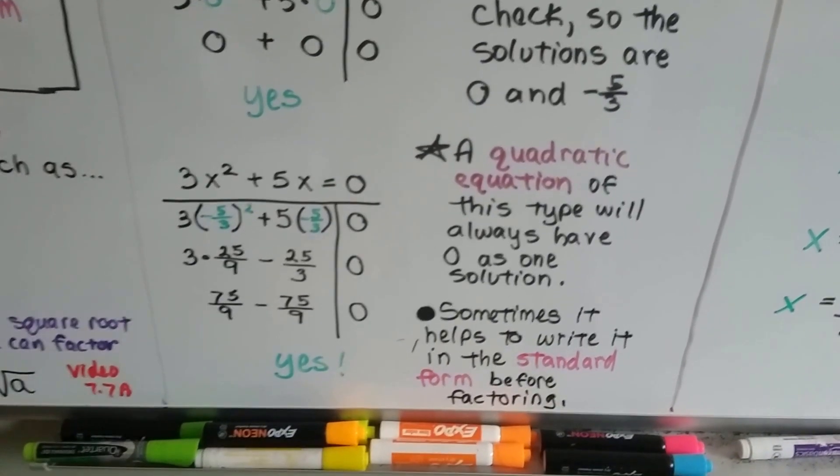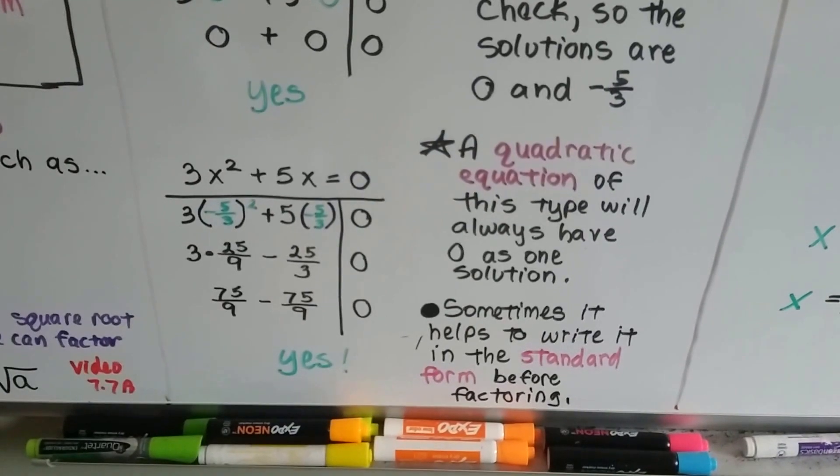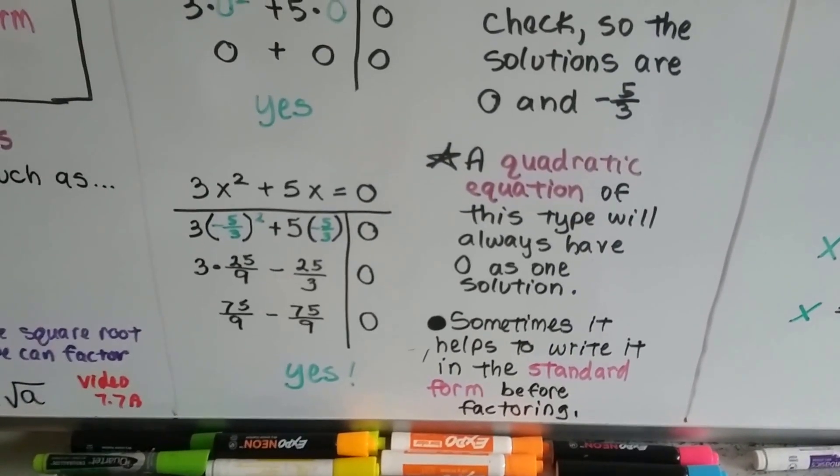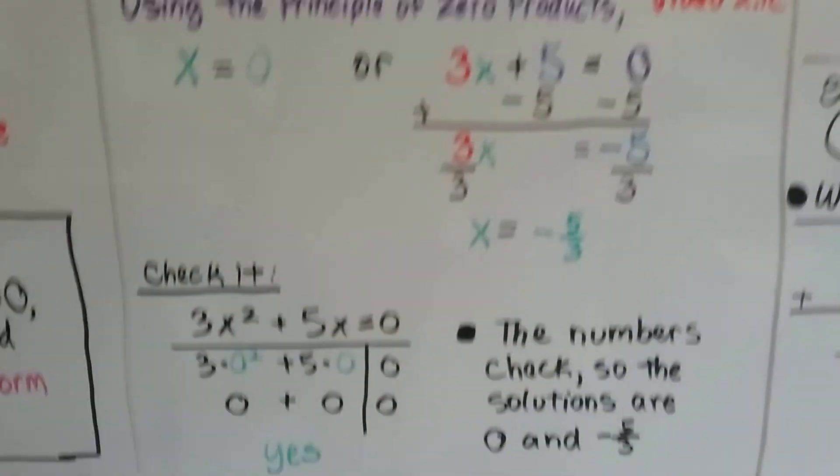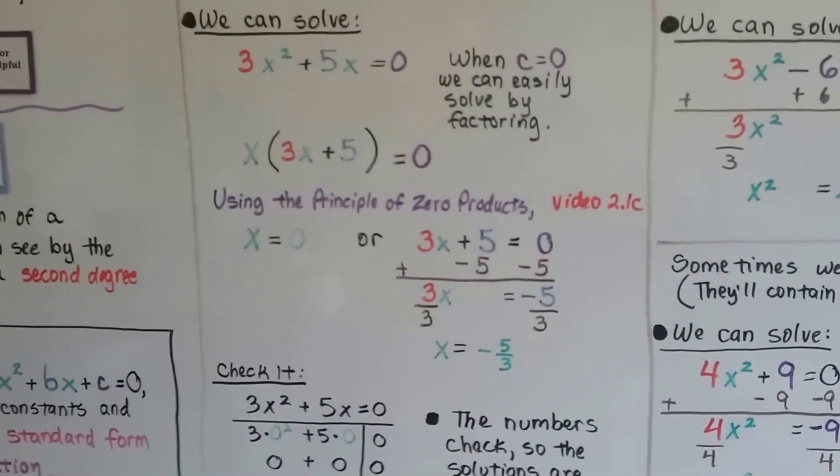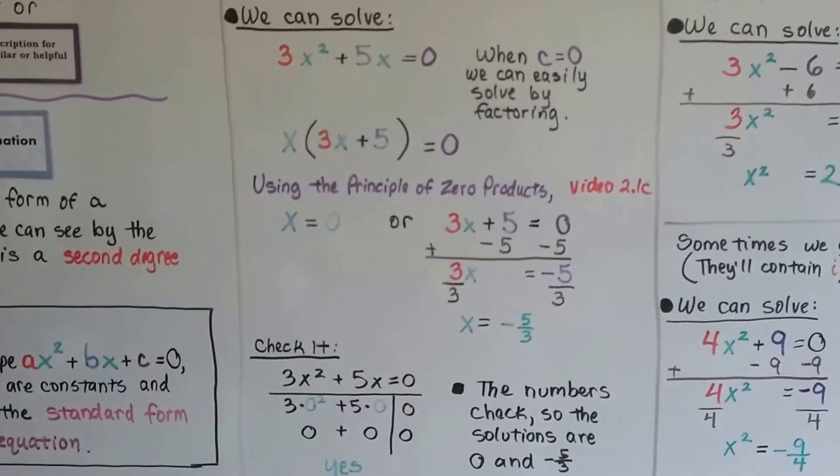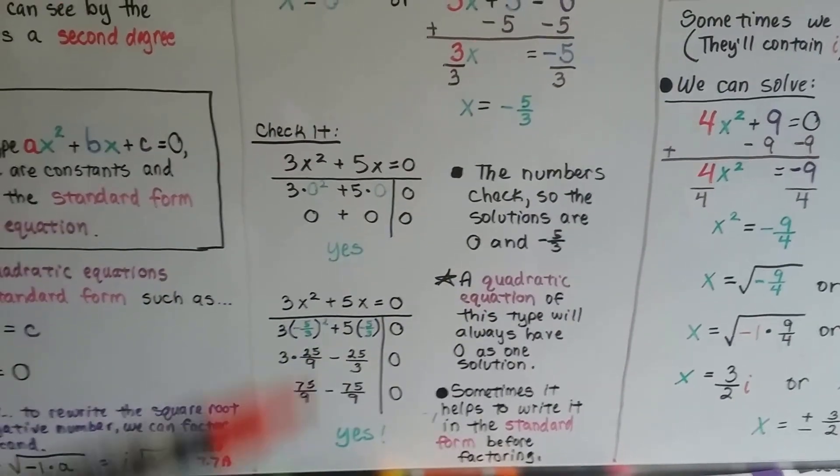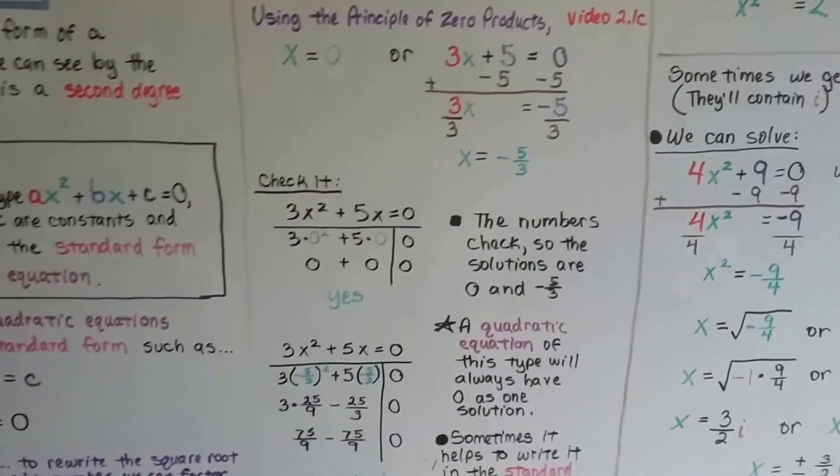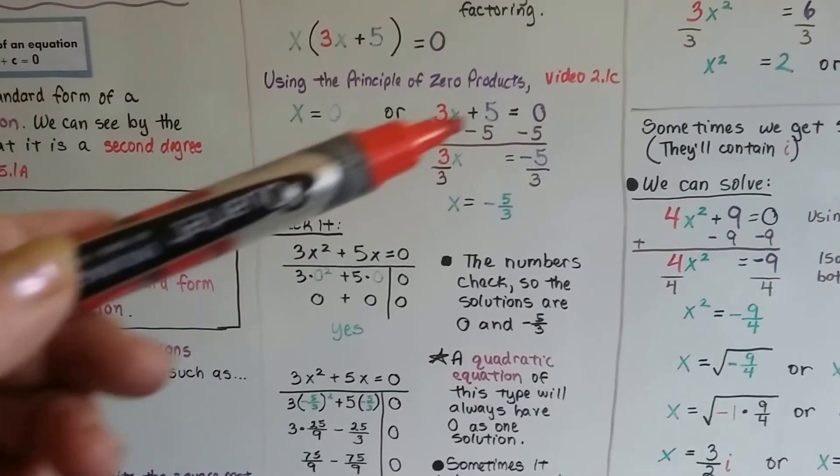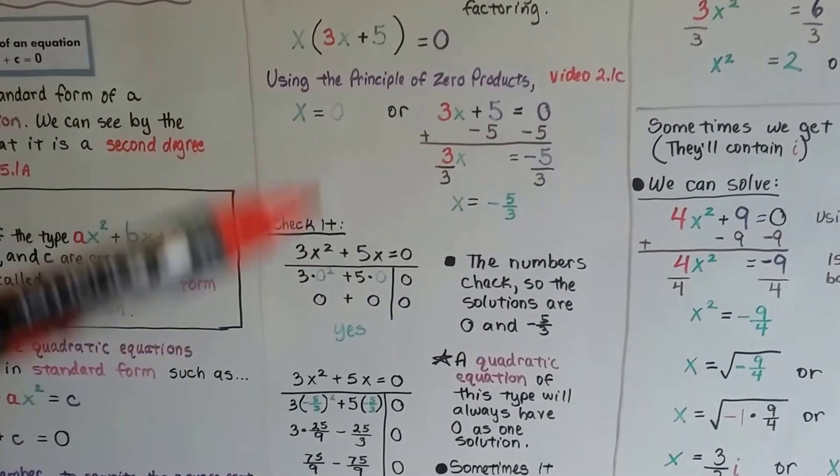A quadratic equation of this type will have zero as a solution. Sometimes it helps to write it in the standard form before factoring. And that will make it easier for you. So see how we did that? If you're really confused, try checking out these previous videos. But I think it's pretty straightforward if you've been following along. Make sure you check it, just to make sure that one of them is not wrong. Maybe one of them is a solution and one isn't, so you want to check them, don't you?